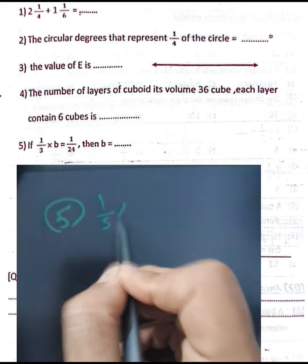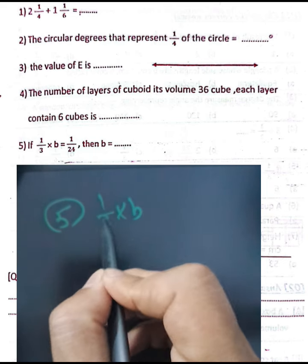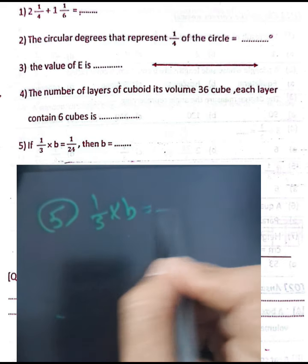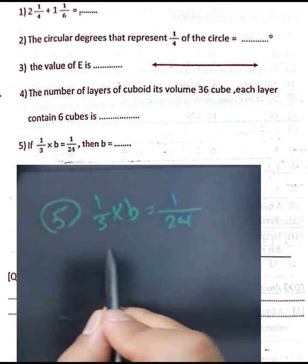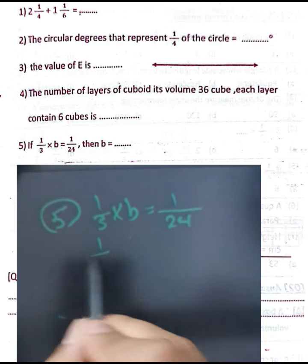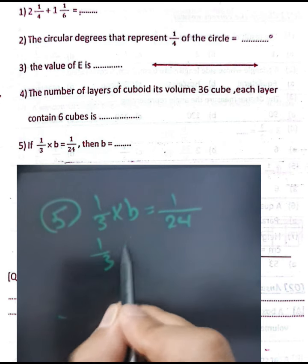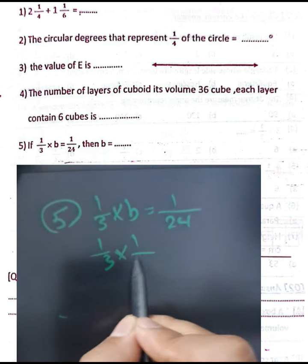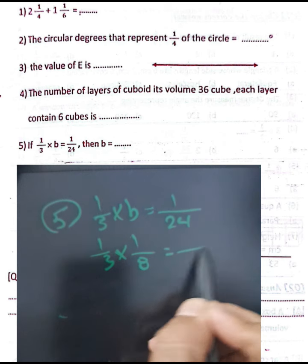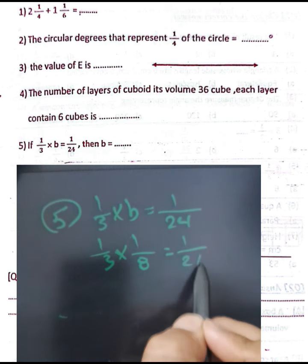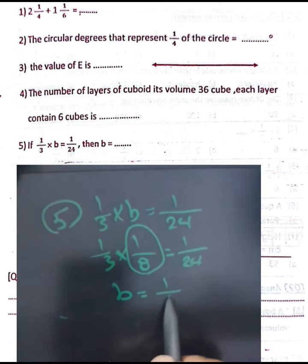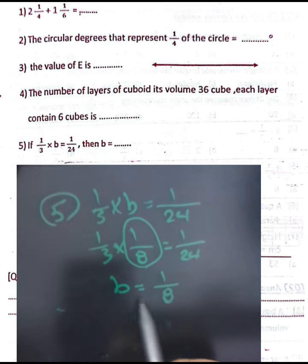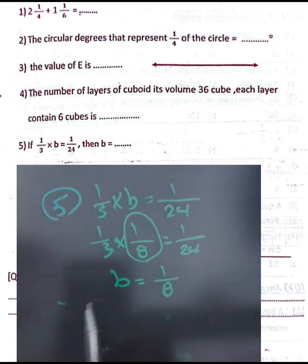Question number five: one-third times b equals one-twenty-fourth. To find b: 3 times 8 equals 24, so the value of b equals one-eighth.